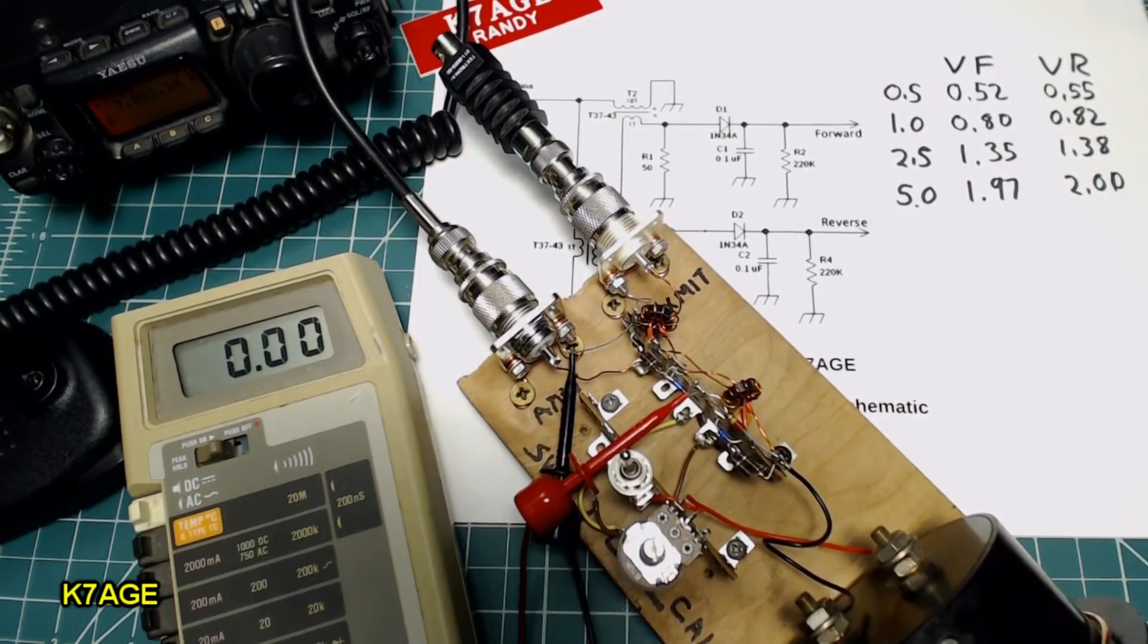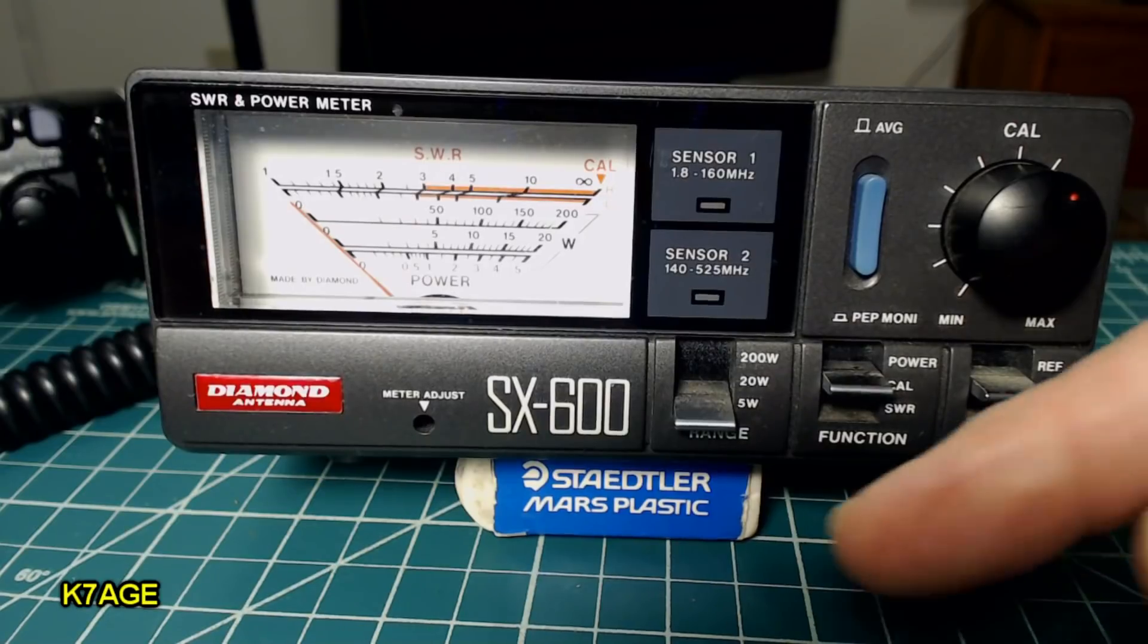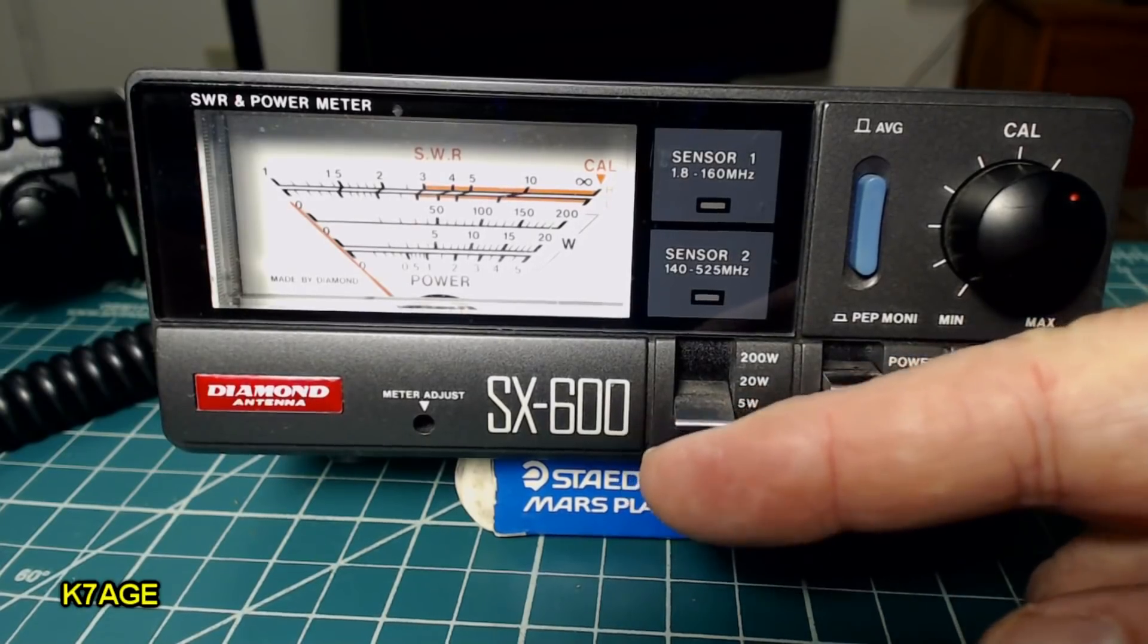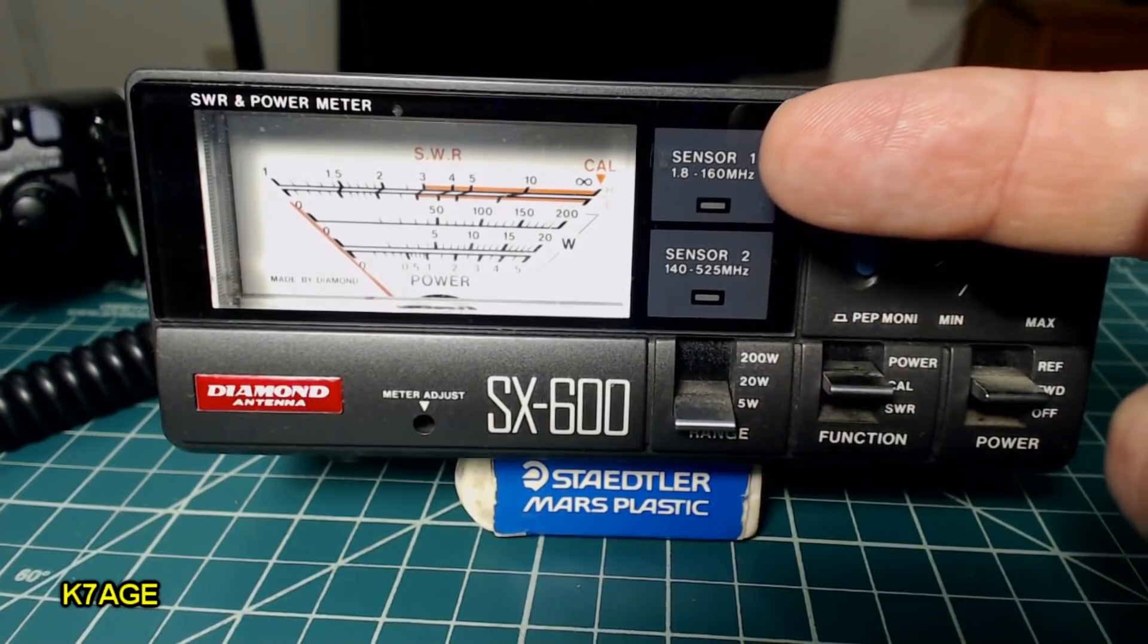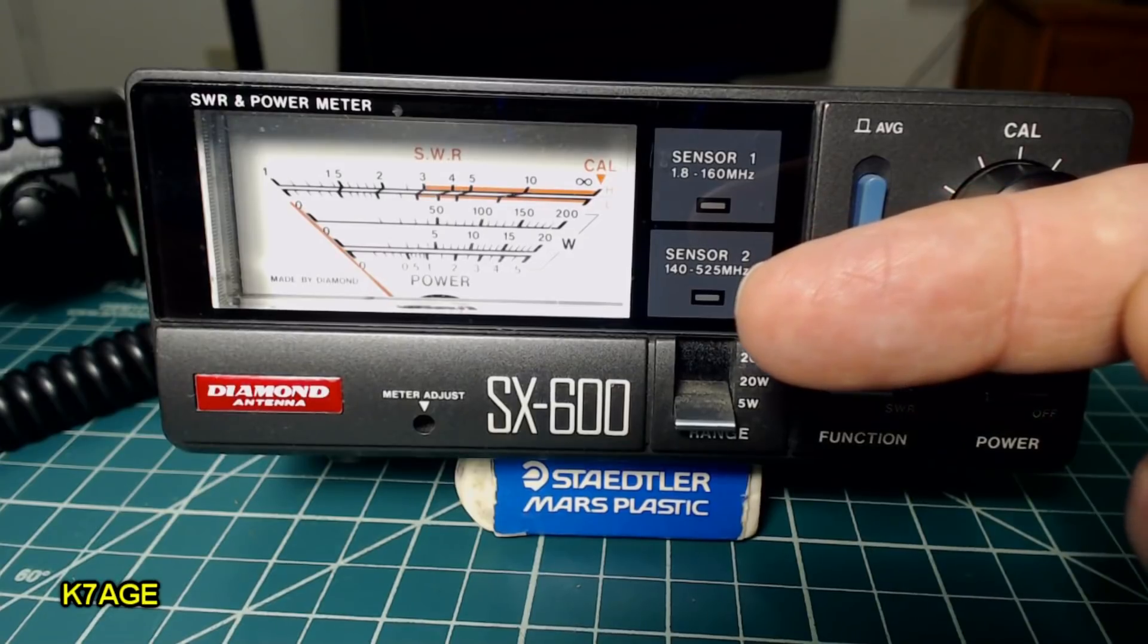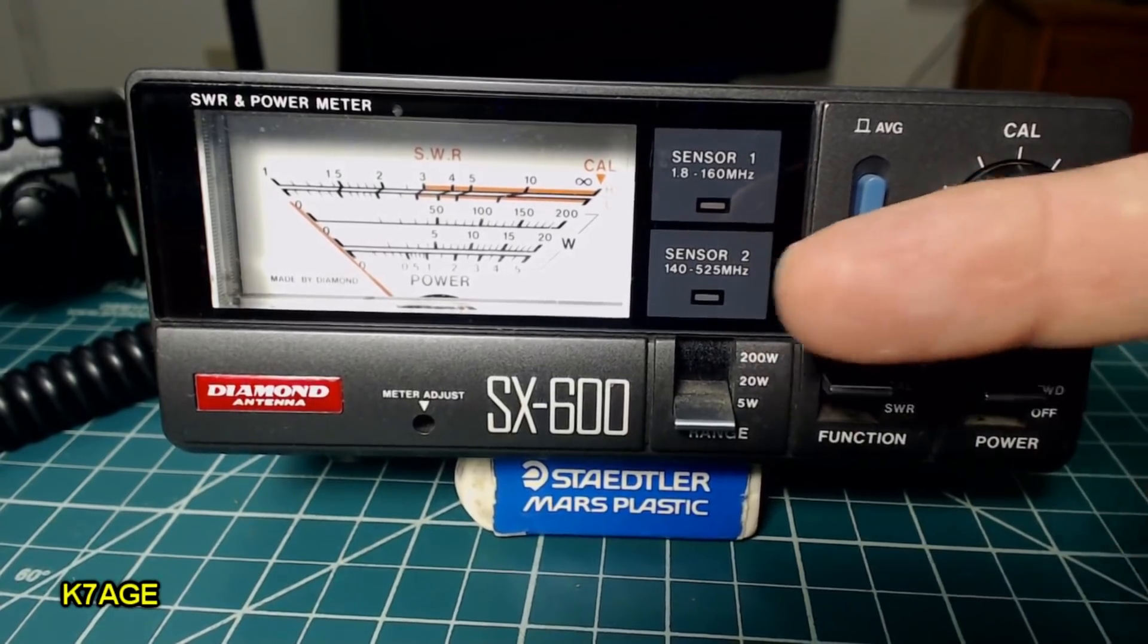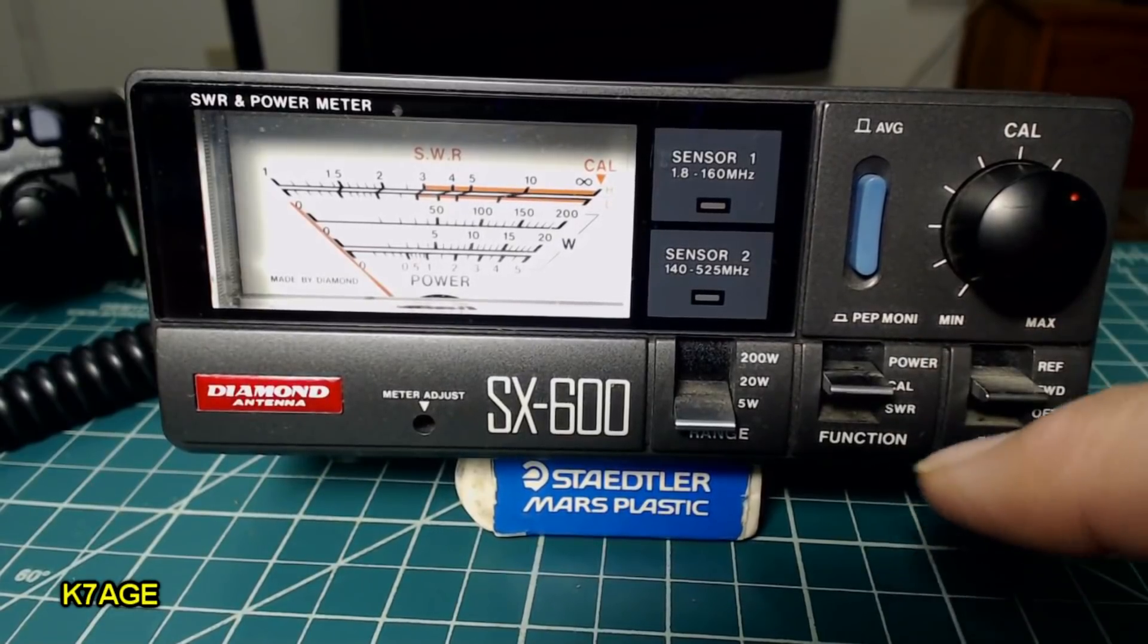So let's take a quick look at a commercial SWR meter to see how that works. So I have my Diamond SX600 SWR power meter. This is kind of nice because it has two sensors. One for HF and another one optimized for UHF, VHF. One of the things I don't like is that the switch is on the back to go between the two. Should have been on the front.